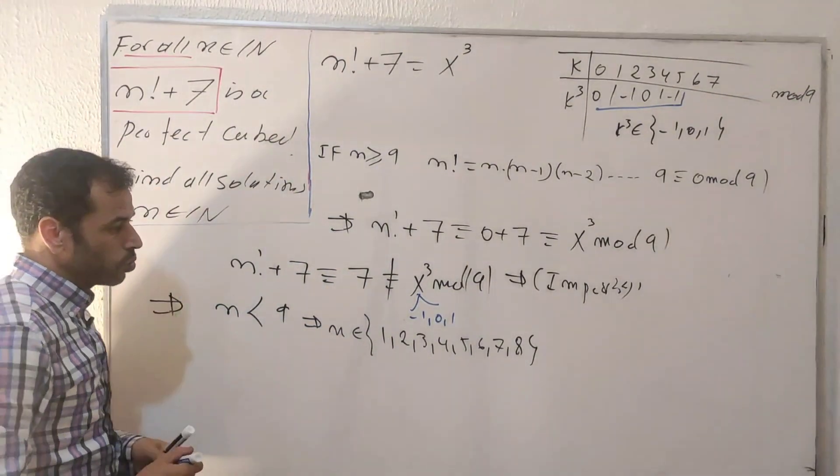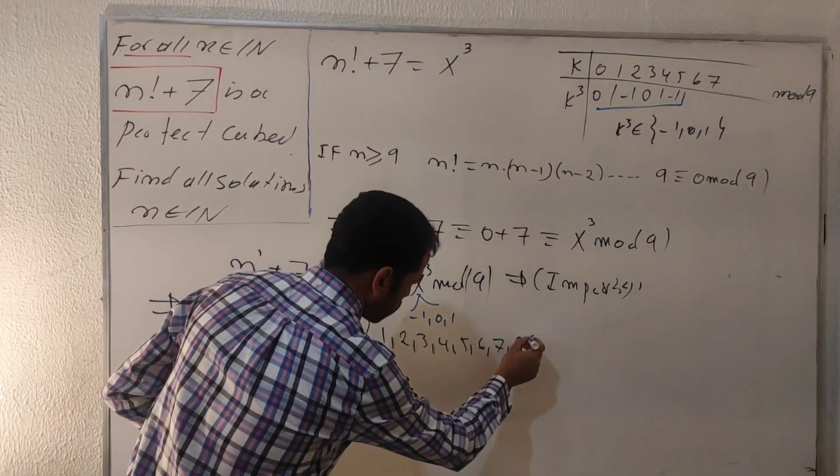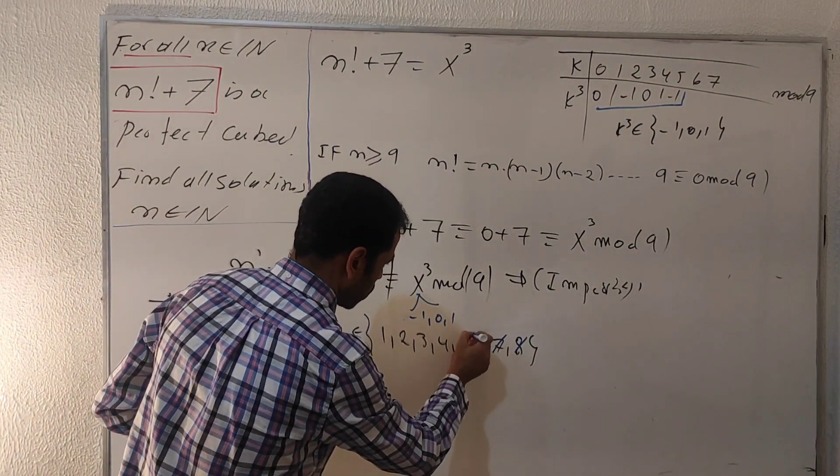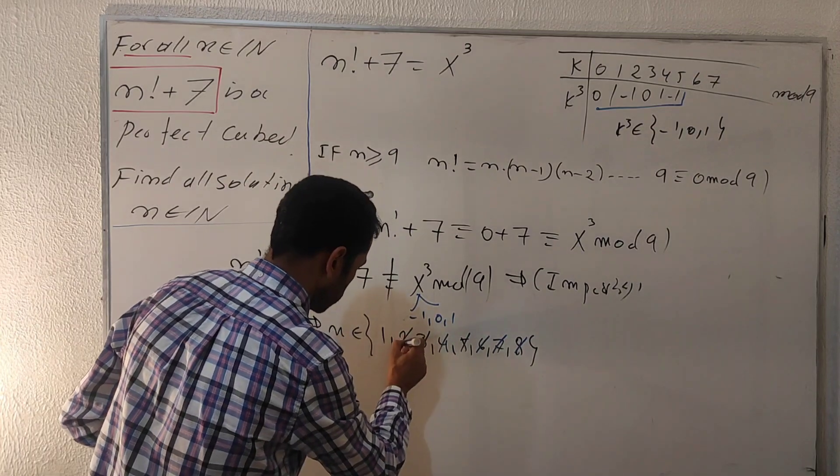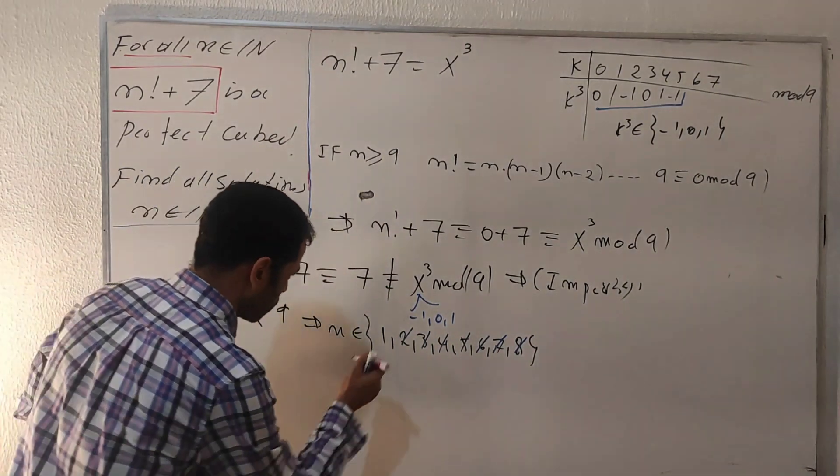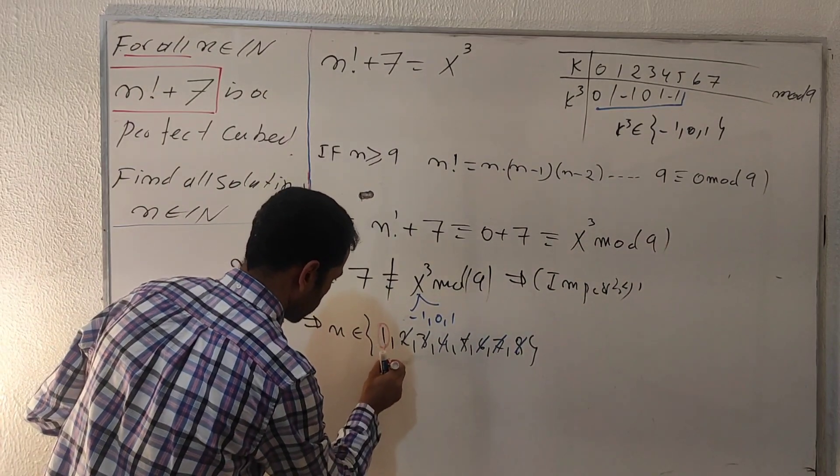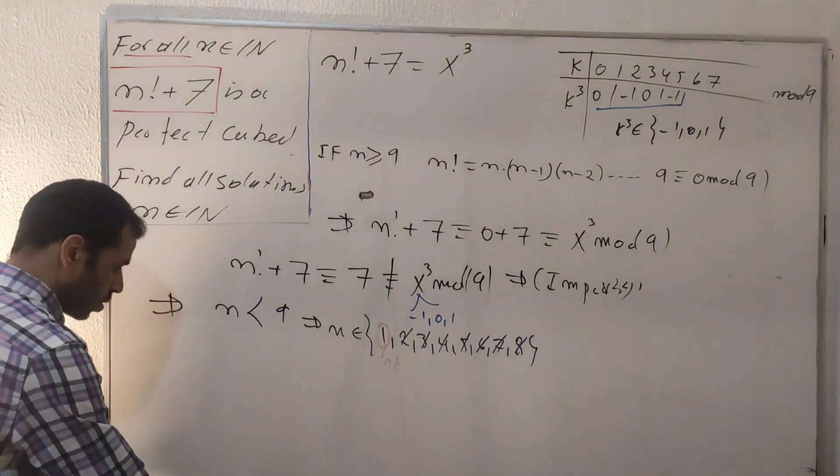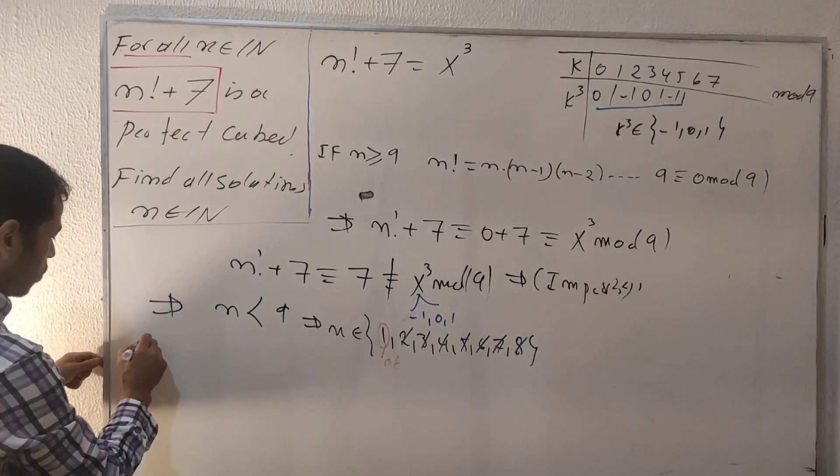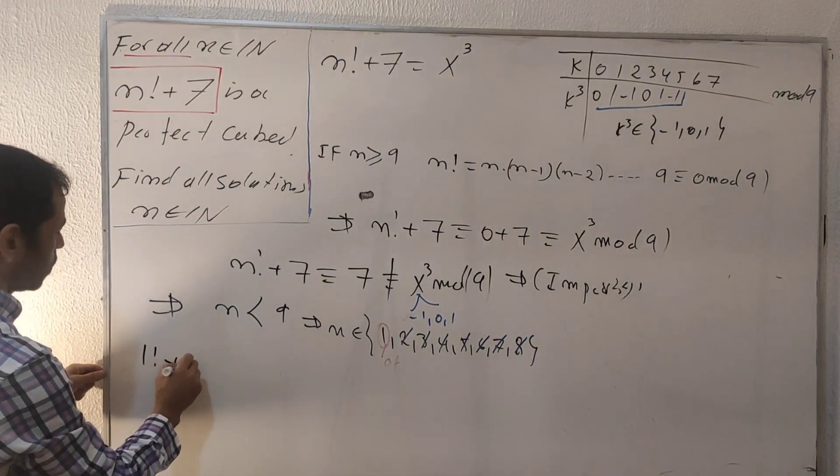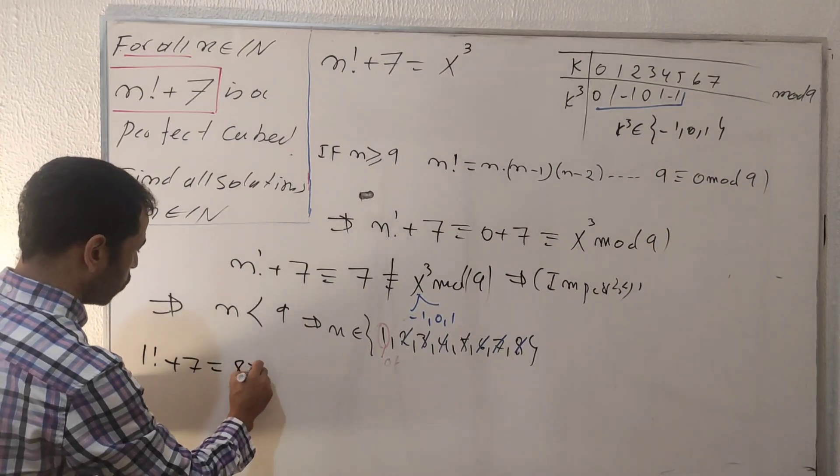By checking, eight doesn't work, seven doesn't work, six doesn't work, five doesn't work, four doesn't work, three doesn't work, number two doesn't work. This one works. Let's check: one factorial plus number seven is eight, which is two cubed.